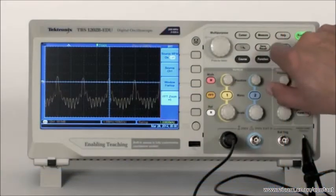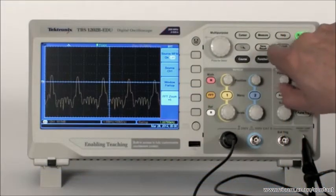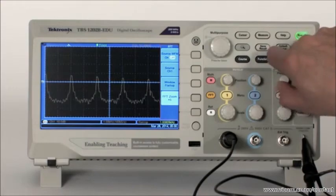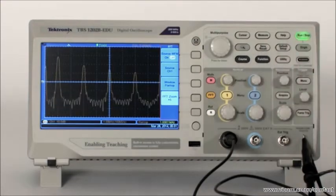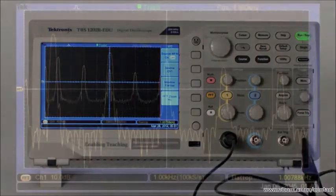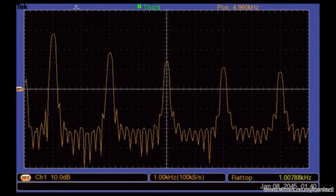Finally, we usually want to look at the fundamental frequency and lower harmonics. Use the horizontal position knob to shift the spectrum to the right. The displayed FFT figure shows the DC offset component, the fundamental frequency, odd harmonics, and even harmonics of the square wave.